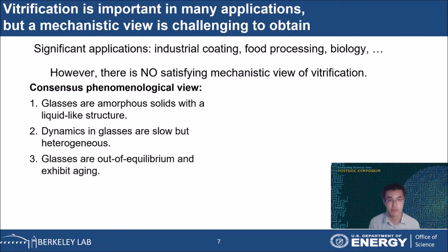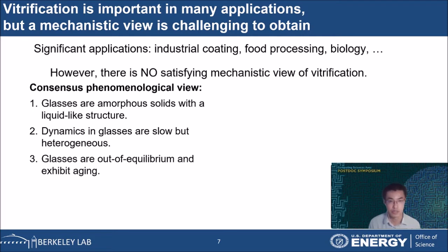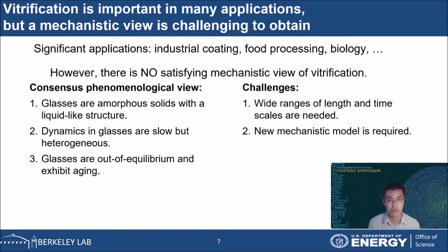We know that by definition, glasses are amorphous solids with a liquid-like structure. We know that glasses have large viscosities, indicating the dynamics are slow. Recent studies have also found that dynamics are heterogeneous — the velocity of molecules in glasses does not follow the classical Boltzmann distribution, and there are small groups of particles that move at a higher speed. Glasses are out of equilibrium and exhibit aging, meaning that they take extremely long times to equilibrate. Most glassy materials function under such non-equilibrium conditions and may not reach equilibrium within the lifetime of the universe.